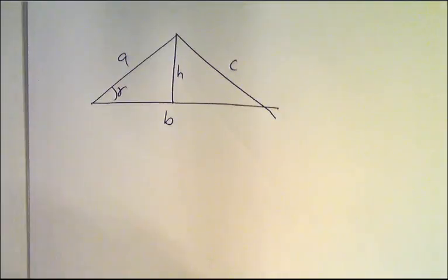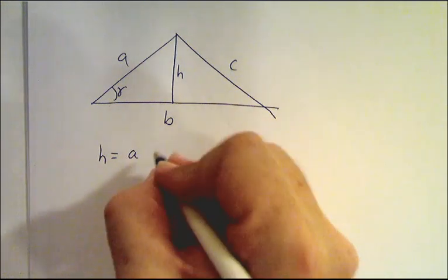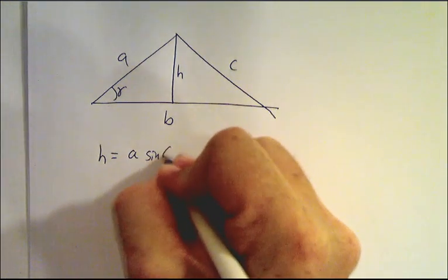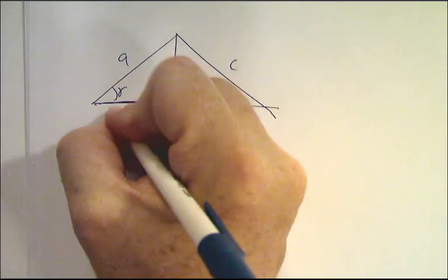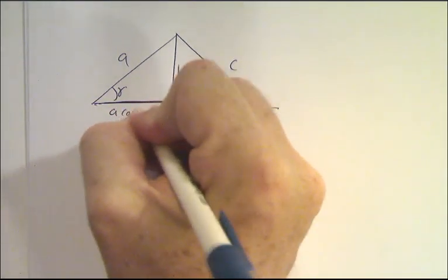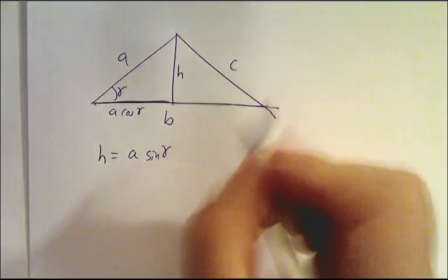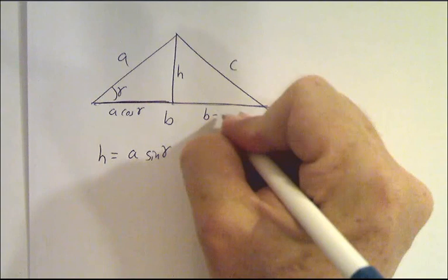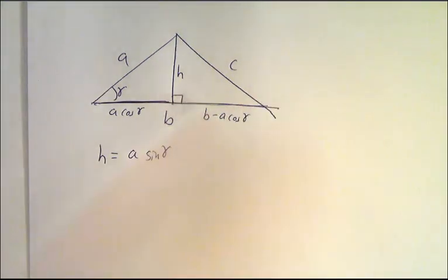And we know that H is A sin gamma. Now this side over here is going to be A cos gamma. So what's left over here has to be B minus A cos gamma. And now we've got a right triangle.